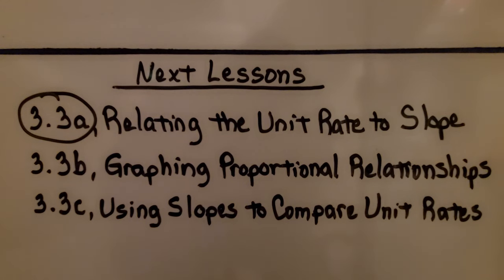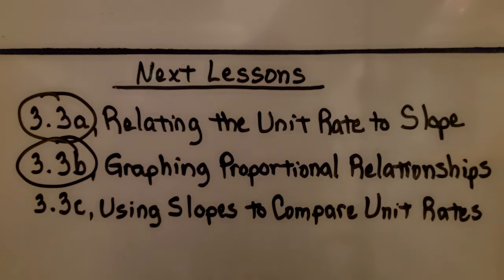We're finished with 3.3b. We're going to move on to 3.3c: using slopes to compare unit rates.